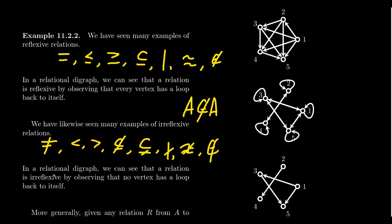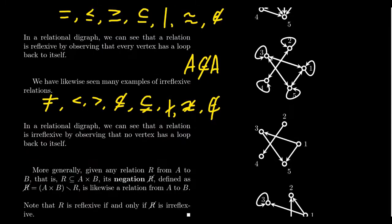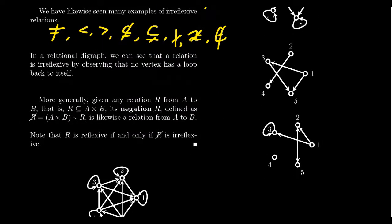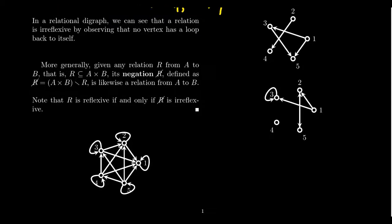On the relational digraph, irreflexivity is the opposite of reflexivity: having a loop at every vertex makes a relation reflexive, while the absence of a loop at every vertex makes it irreflexive. The pentagon example with no loops on any vertex is an irreflexive relation. A diagram with loops at every vertex is reflexive.